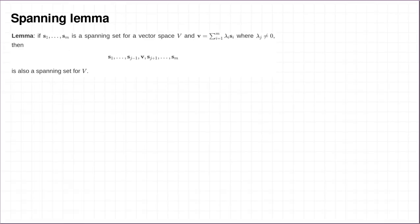The first step on our way to proving this result is called the spanning lemma. What it says is that if you have a spanning set S1 up to SM of a vector space V, and if you have an element, little v, of big V, which can be written as a linear combination of the S's, in such a way that the coefficient of S_J is not zero, then the sequence you get by replacing S_J with v is still a spanning set for V.